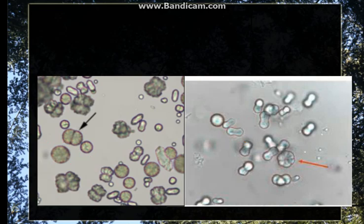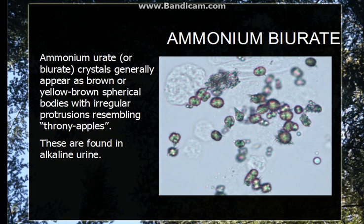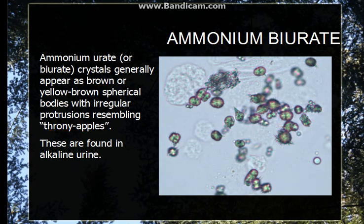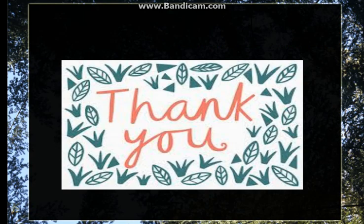Going to the ammonium biurate crystals — they are yellowish to brown in color and appear like thorny apples. The crystal is spherical, yellowish-brown, and has irregular protrusions coming out of it, resembling a thorny apple. They are also present in alkaline urine. That was all about the crystals present in the urine.